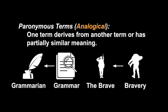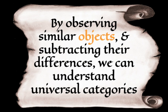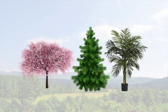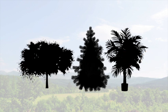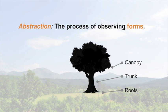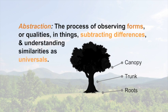Now let's talk about what we understand, how we understand, and how that leads to the ten categories. Aristotle is an empiricist, which means knowledge starts from observation. By observing similar objects and subtracting their differences, we can understand universal categories. Looking at several different kinds of trees, we can observe their similarity by subtracting their differences—like color, shape, or fruit—until we're just left with a simple concept of tree that applies to all trees universally. Trees have a canopy, a trunk, and roots—a minimal common denominator. Abstraction is the process of observing forms or qualities in things, subtracting differences, and understanding similarities as universals.